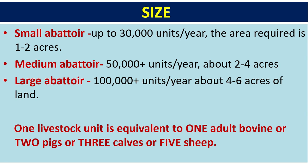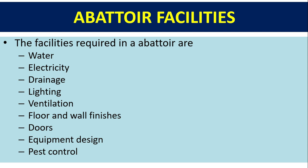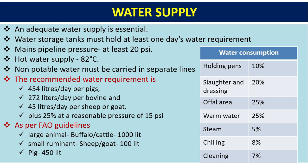Abattoir facilities required include water, electricity, drainage, lighting, and pest control systems. An adequate water supply is essential — storage tanks must hold at least one day's water requirement. Pipeline pressure should be at least 20 PSI, with a hot water supply of 82°C. Non-potable water must be carried in separate lines. Recommended water requirements are 454 litres per day per pig, 272 litres per day per bovine, and 45 litres per day per sheep or goat, plus 25% at a pressure of 15 PSI.